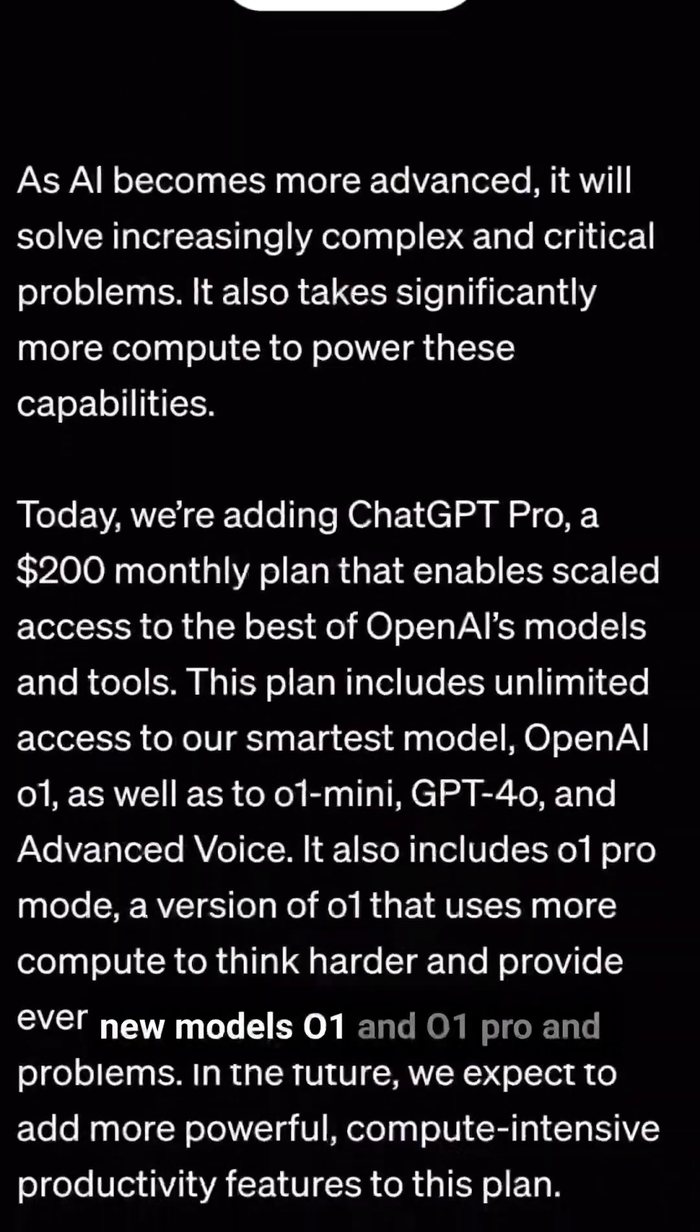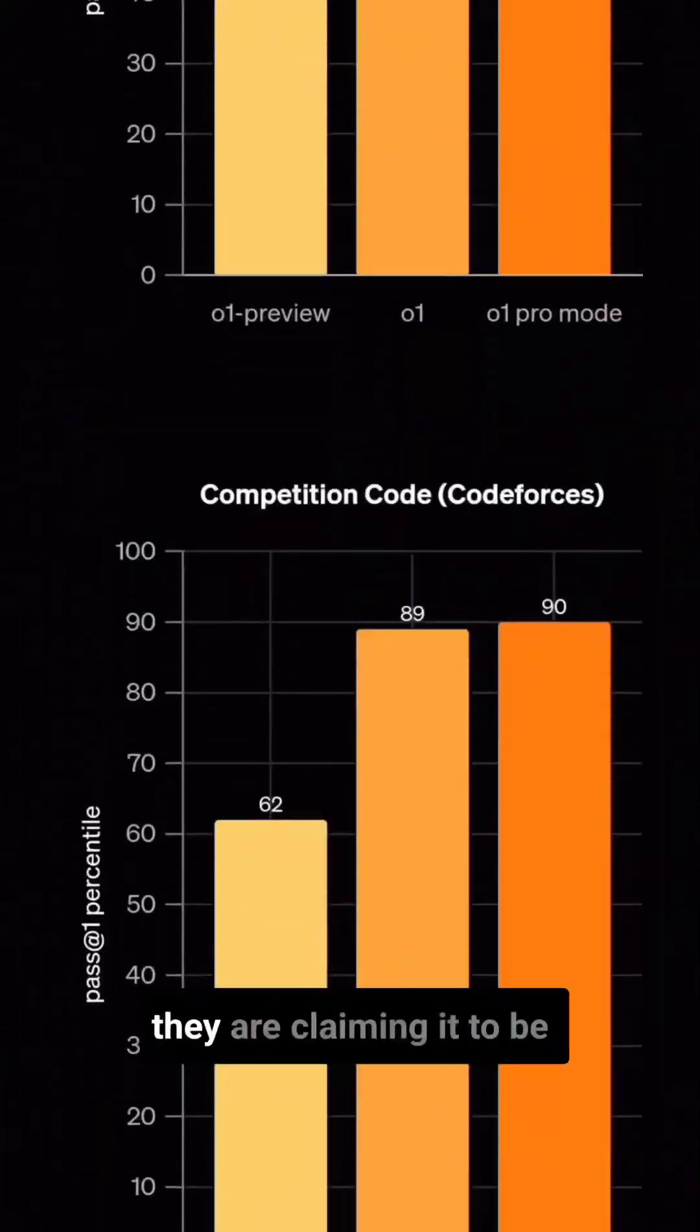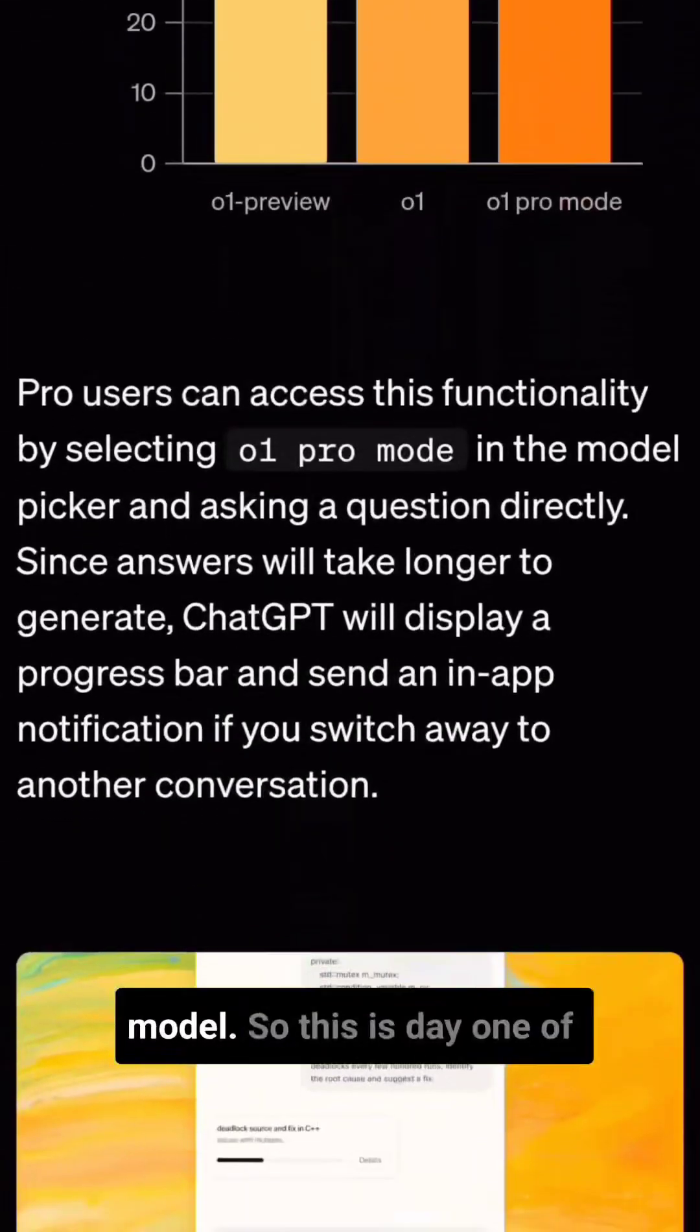OpenAI recently launched two new models, O1 and O1 Pro, and they are claiming it to be the world's fastest and smartest model.